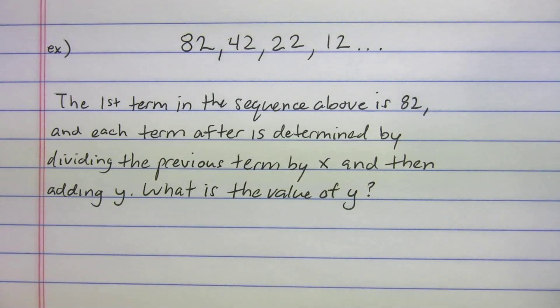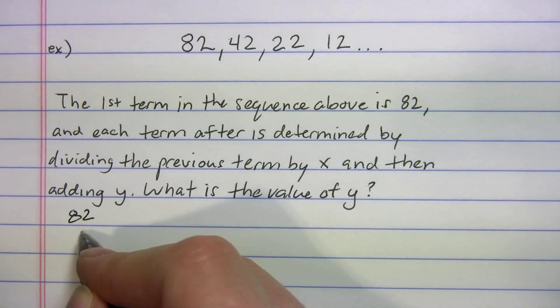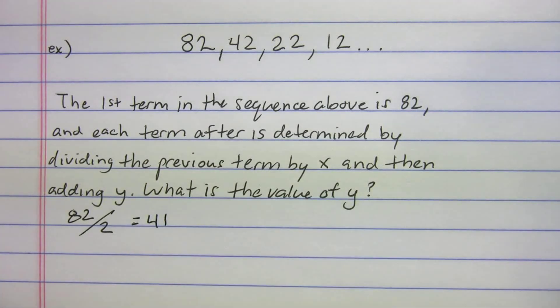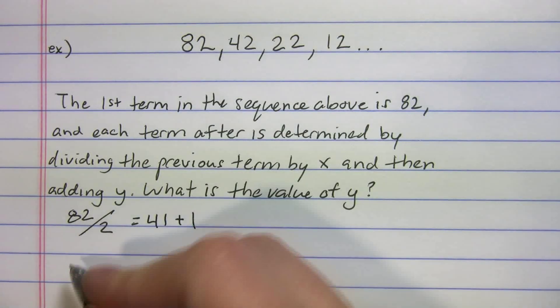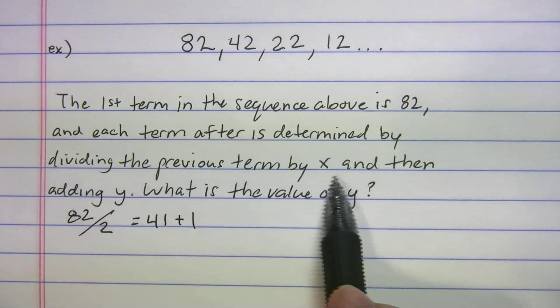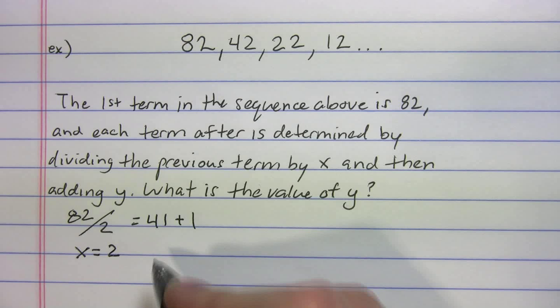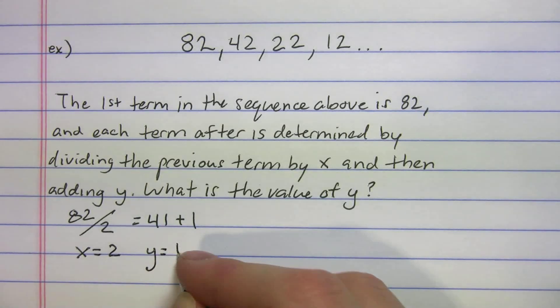We want to try and figure out how do I get from 82 to 42. Well, you could divide by 2, right? So 82 divided by 2 gives you 41, but I need to get to 42. So what am I going to add? I need to add 1. So maybe X equals 2 and Y is going to equal 1.